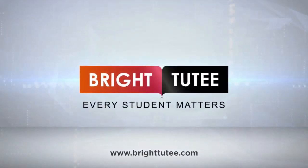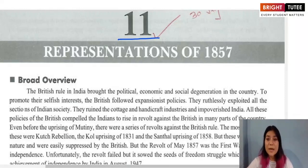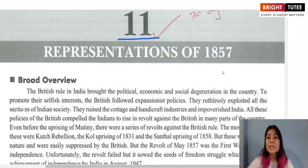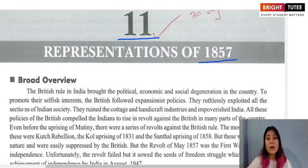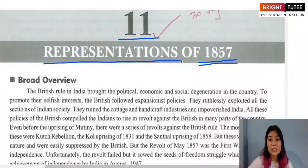Welcome back to our history class. Today we are going to look at Chapter 11, which covers a very popular event in the history of India — the Revolt of 1857. This chapter is all about that event that took place in the summer of 1857, and it mainly tells us about various representations of the event.